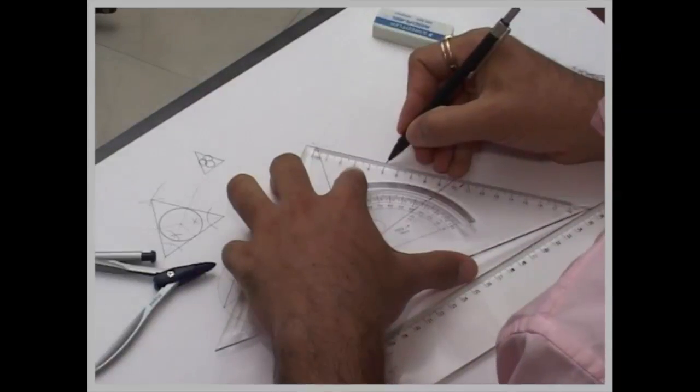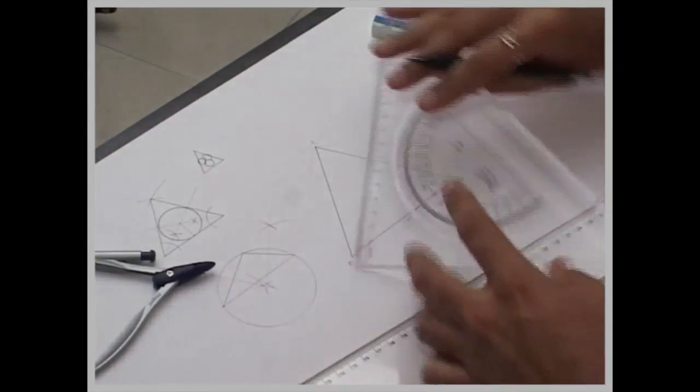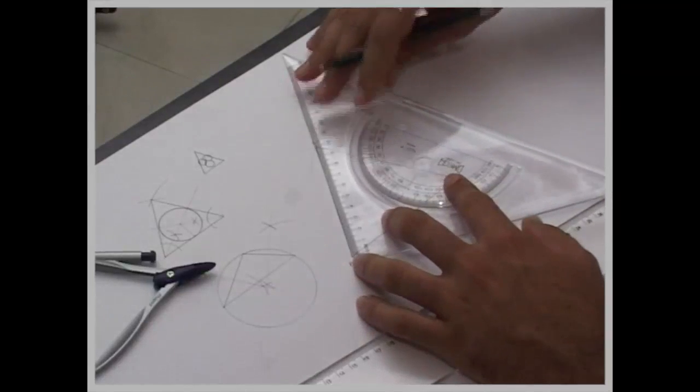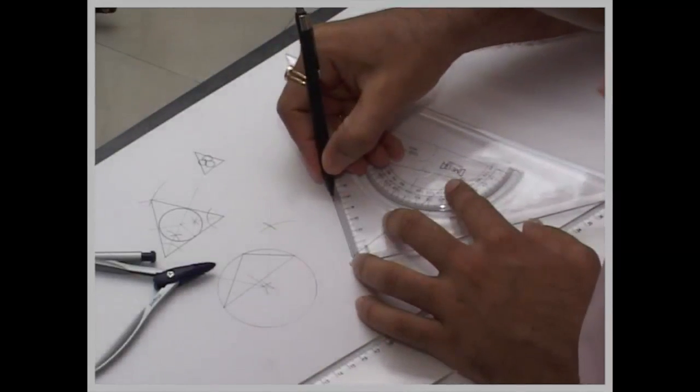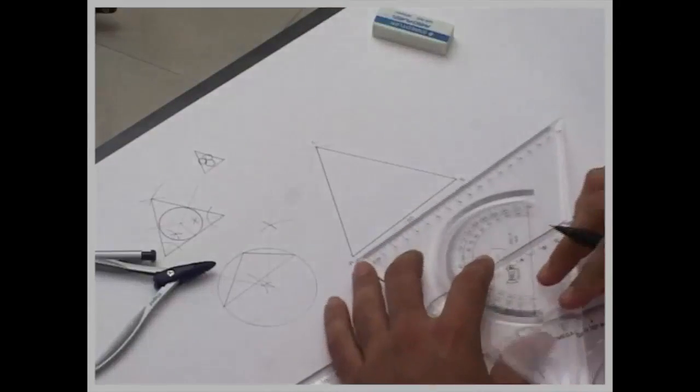Now, since we already know that it is an equilateral triangle, we can directly mark the midpoint of all three sides.